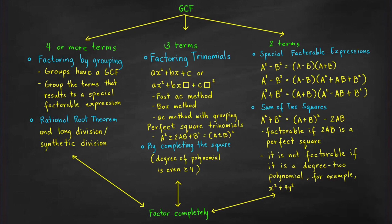Keep in mind that a sum of two squares is not factorable if it is a degree-two polynomial like x² + 4y². The last step is to check whether you have completely factored the given expression — make sure all your factors cannot be factored further. If you can still factor a factor, go back to step two and check whether the factor has two terms, three terms, or four or more terms, then apply the appropriate factoring technique.